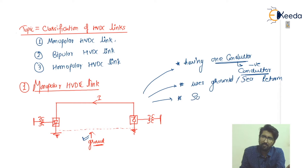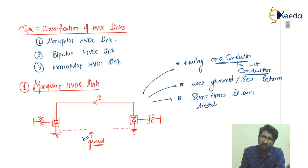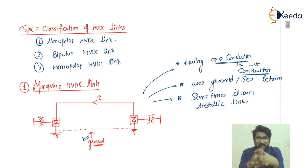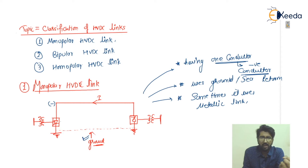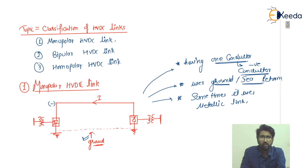The monopolar HVDC link uses ground or sea return. Sometimes it also uses a metallic link or conductor. The key points to remember: it has only one conductor which is a negative conductor, chosen for low corona effect, and current returns via ground or sea return.